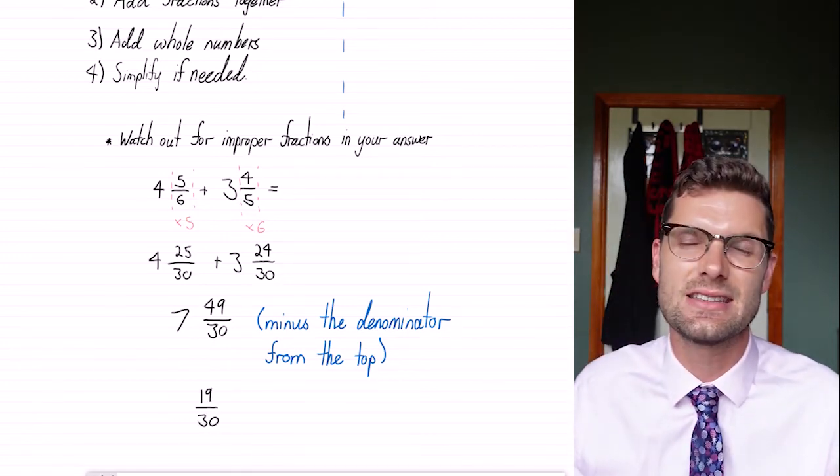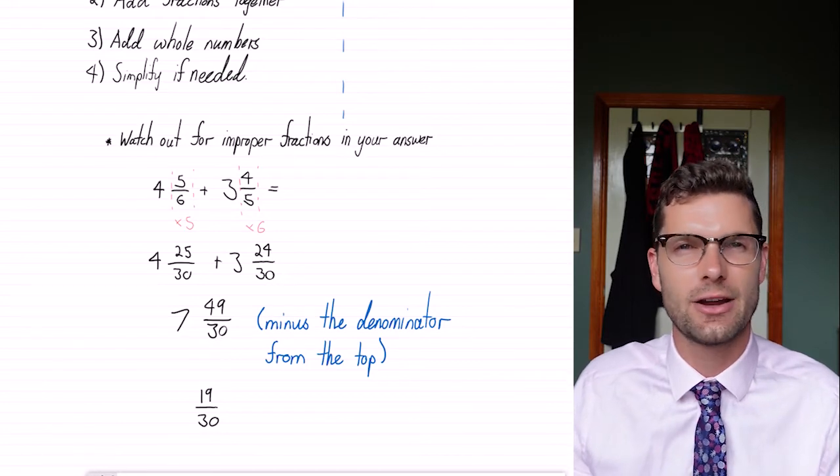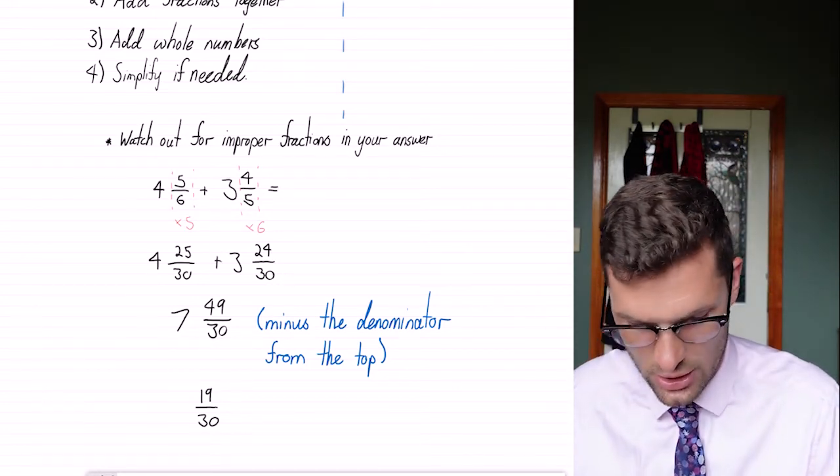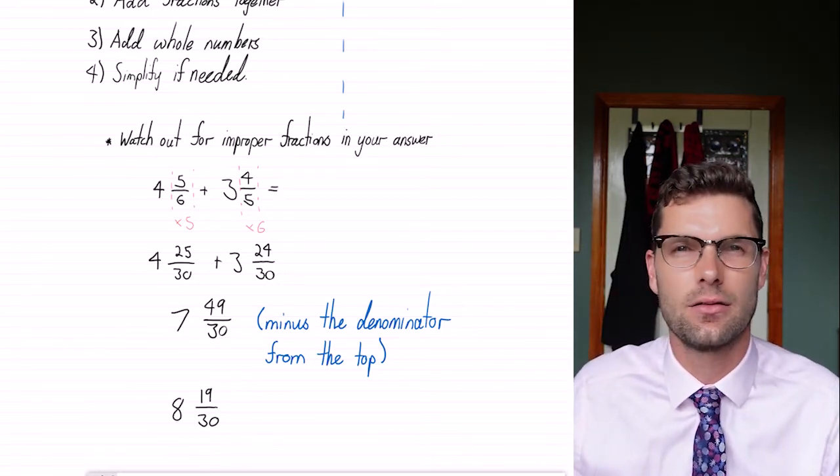But instead of having seven, we've moved that whole one from a fraction out to the front. So we're left with eight, 19 over 30.